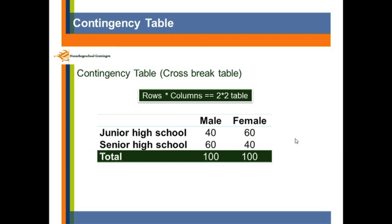For each row and column, we can calculate the total. For example, we have 100 males and 40 of them are in the junior high school, 60 of them are in the senior high school. We also can say that we have 100 junior high school students. Among them, 40 are males and 60 are females. So in total, we have 200 students.